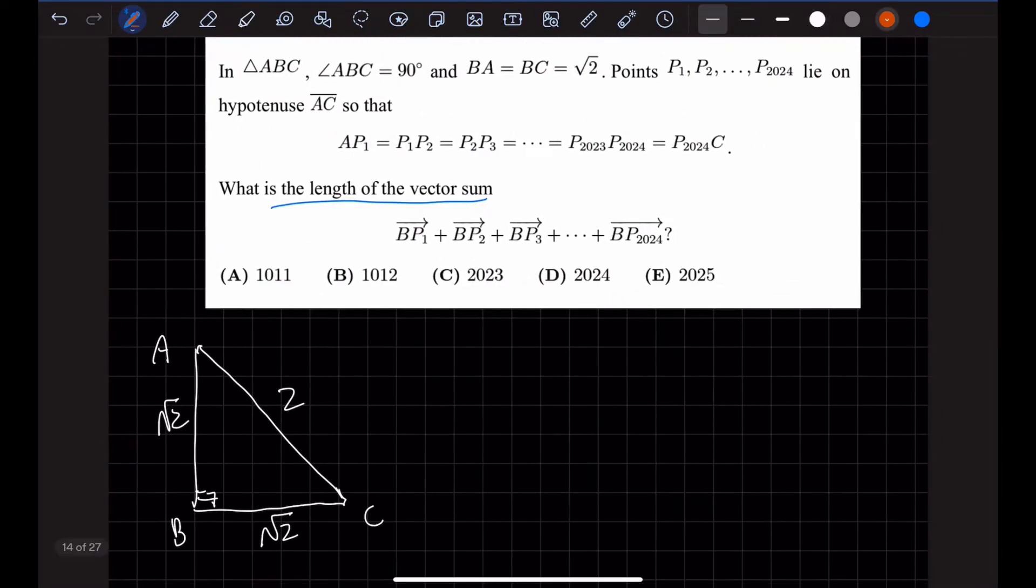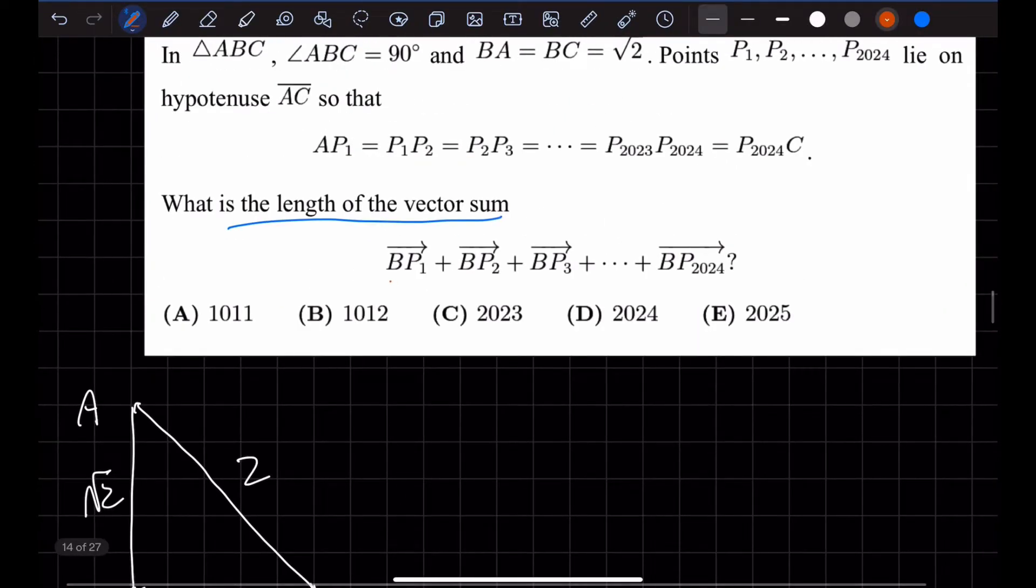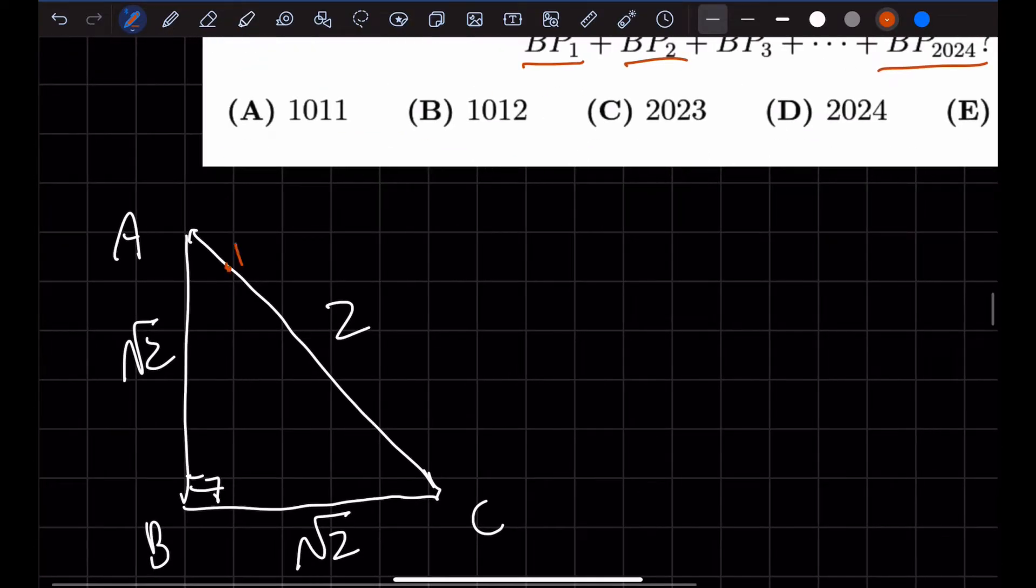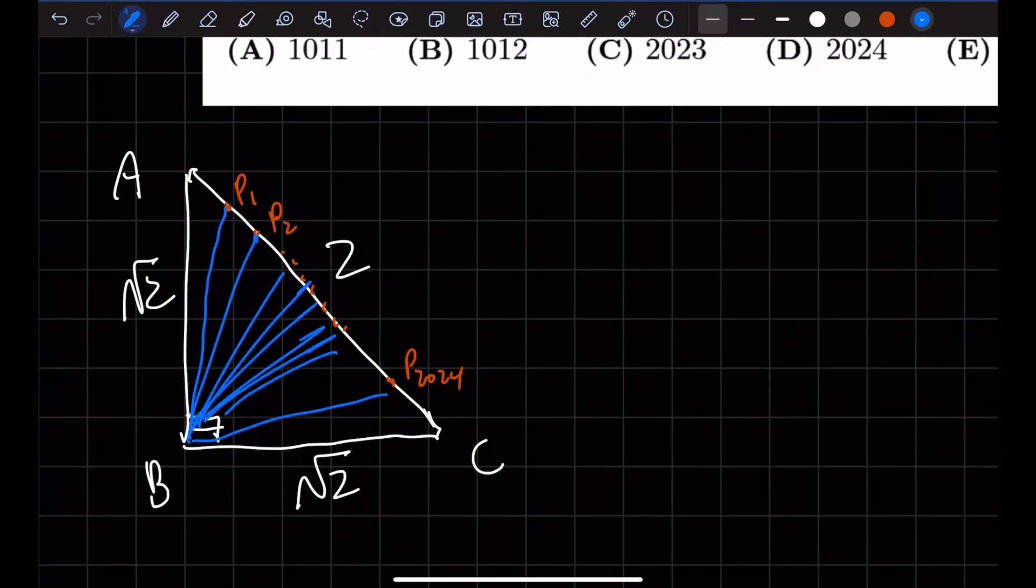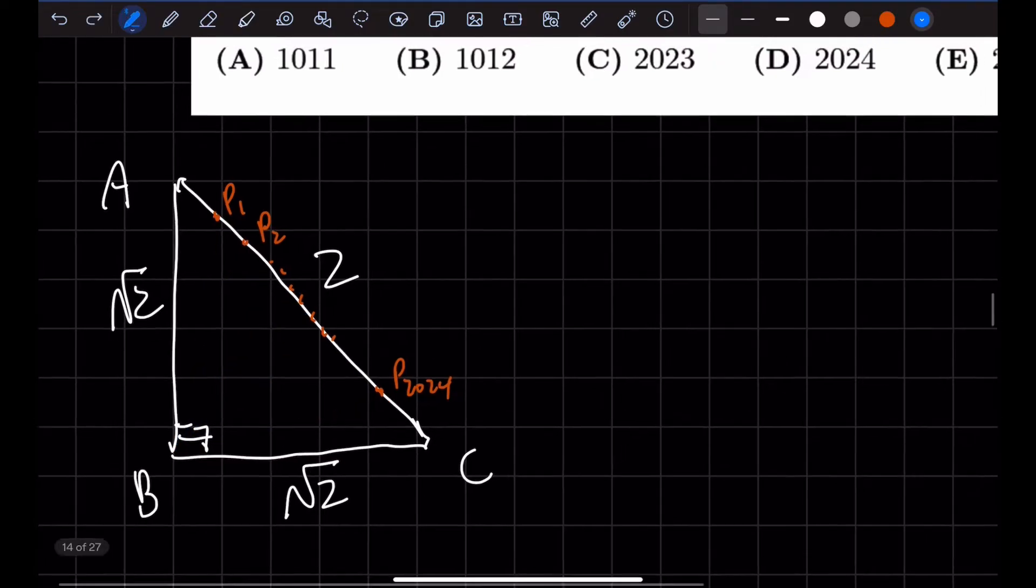And we want to find out what BP₁ + BP₂ all the way to BP₂₀₂₄ is, where P₁ is here, P₂ is here, all the way to P₂₀₂₄. So there would be 2024 evenly spaced dots on the hypotenuse. We want to find out what each of these blue lines added together would be.